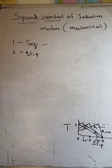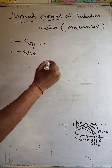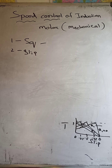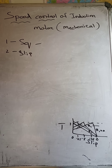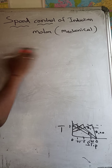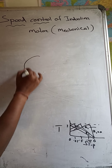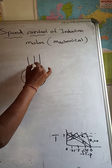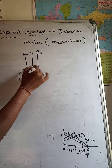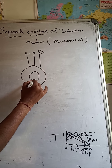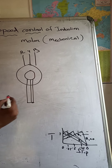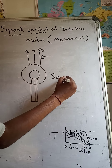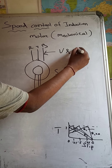In a squirrel cage induction motor, the rotor is short-circuited. That's why you cannot change the speed with respect to resistance. We can change the speed of a squirrel cage induction motor by changing the frequency and the voltage. If you see, this is the stator and this is the rotor — if you give the three-phase supply R, Y, and B to the stator, the rotor is short-circuited.